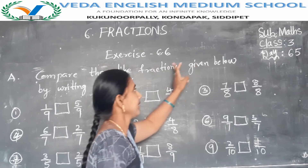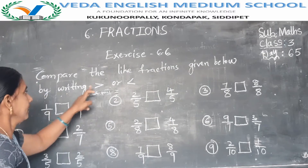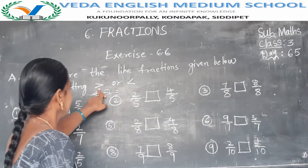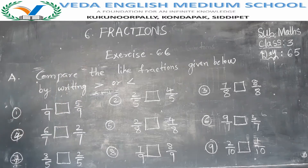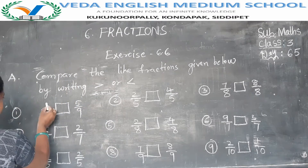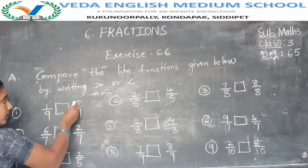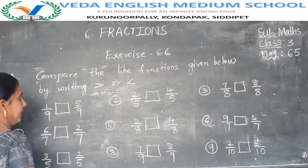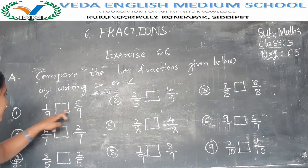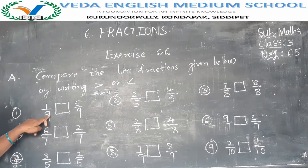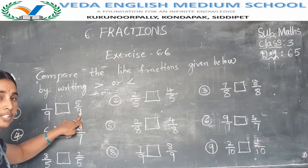Compare the like fractions below using greater than or less than. See Nana — here the first fraction is 1 by 9 and the second is 5 by 9. In this fraction, see Nana, the denominators are the same. Here the denominator is 9 and here the denominator is also 9.